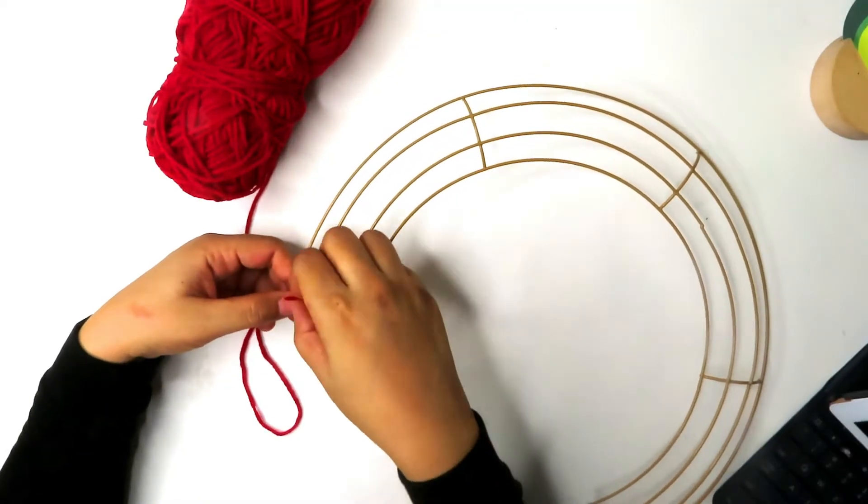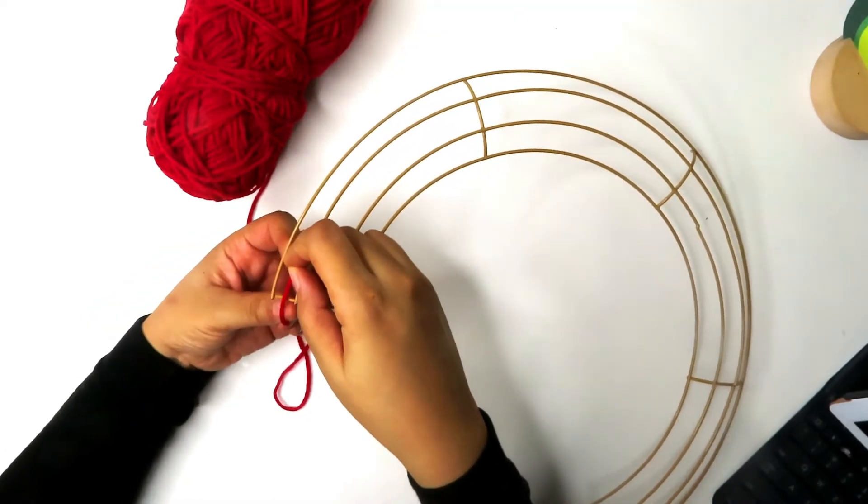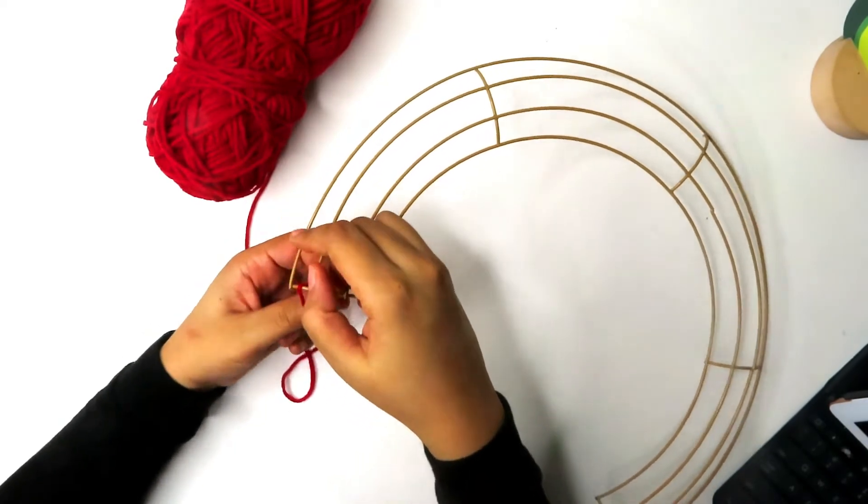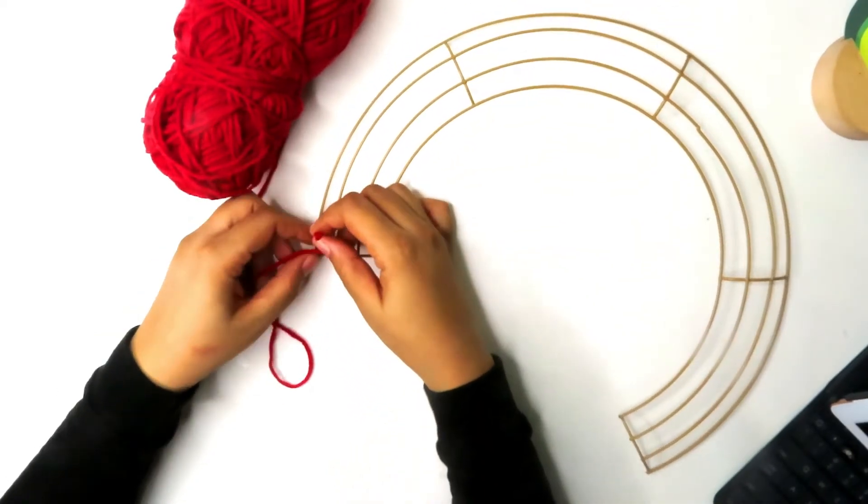Grab your red yarn and tie a double knot in the bottom left hand side of the rainbow in the outermost ring of the wreath form.